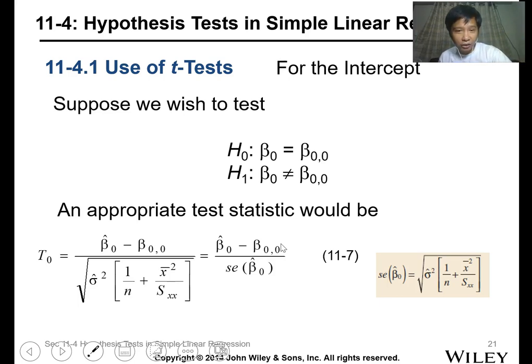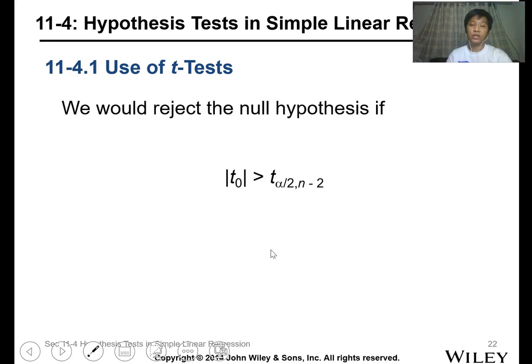For the intercept, it's the same, except the formula for the intercepts uses this t statistic or the statistical test for the intercepts. You can substitute this with your SE beta zero. Then we'll reject when the t calculated is greater than the t critical.